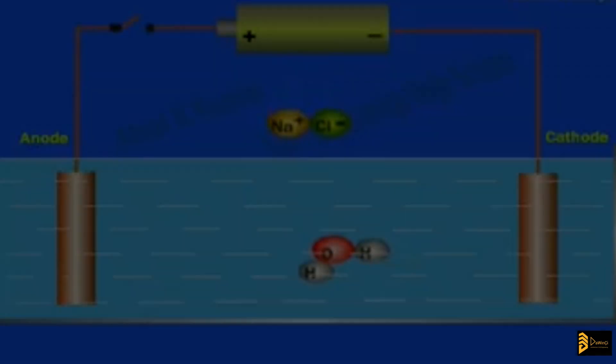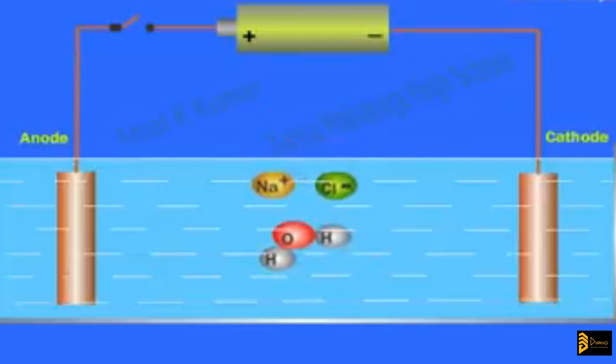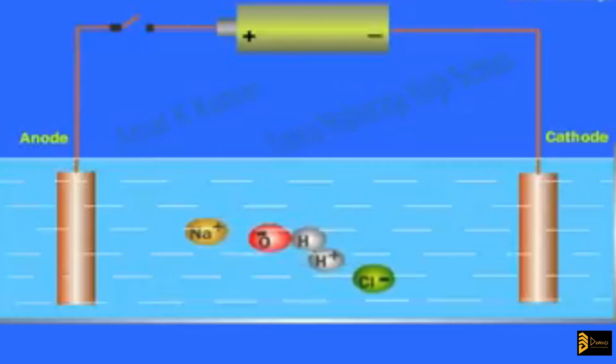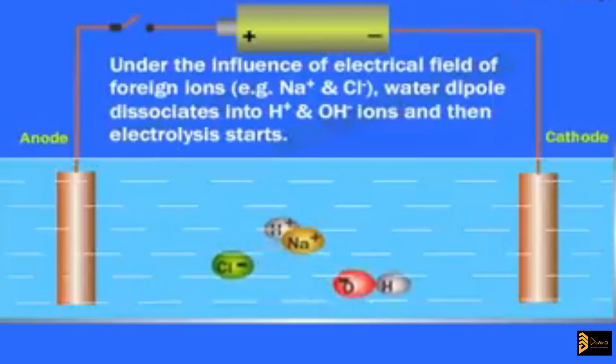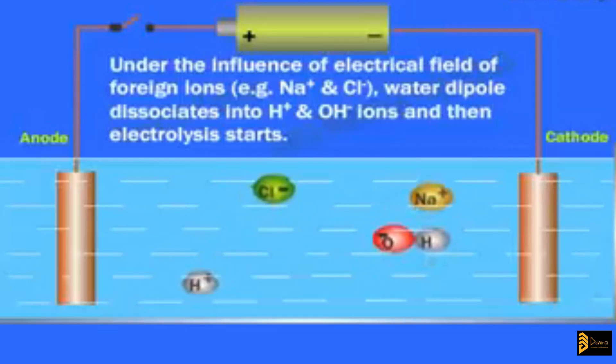To bring this to an example you can easily understand, take car batteries. In car batteries you have the positive, the negative, the anode, and the cathode. Both of those sit in a liquid — usually acid — which acts as an electrolyte. That kind of setup causes electrons to move from the anode to the cathode, and that is what generates electricity.